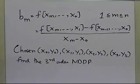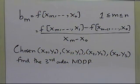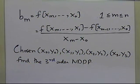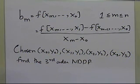So if somebody asks us: I've chosen four data points, can you find the third-order Newton's divided difference polynomial? How would I go about doing that? I'm going to show this to you as a tree of divided differences, because that's the way we're going to show the example in the next segment.